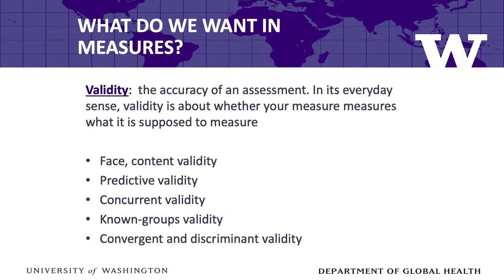We also want measures to be valid. Validity concerns the accuracy of an assessment. In its everyday sense, validity is about whether your measure measures what it is purporting or intending to measure. At one time, measurement experts talked about different types of validity, but nowadays measurement experts say there is only one type of validity: construct validity. Construct validity, simply put, is an assessment of whether the measure in fact measures the construct that you think it's measuring. The lists that you see here are not different types of validity, therefore, but rather different forms of evidence for construct validity.